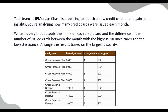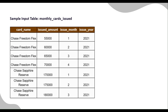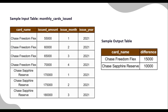You have been given a table with four columns: card name, which is the name of the card; issued amount, which is the number of cards issued in a given month; issue month, which is the month the cards were issued; and issue year, which is the year the cards were issued. Our goal is to find the difference between the month with the highest number of cards issued and the month with the lowest number of cards issued for each credit card.